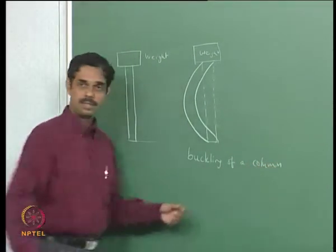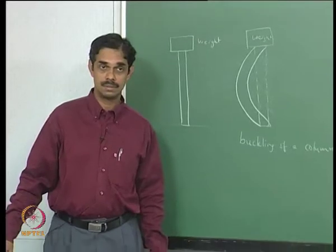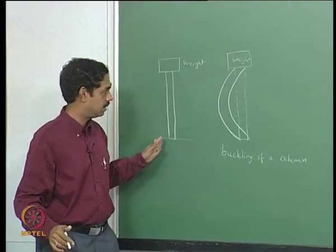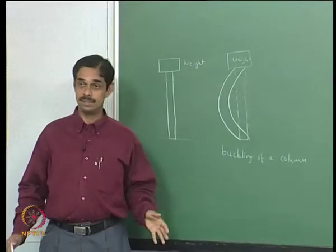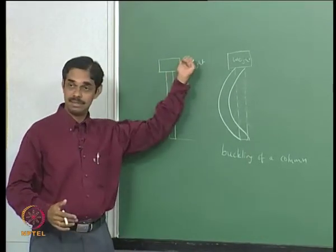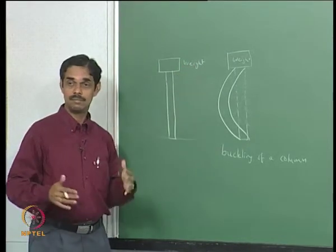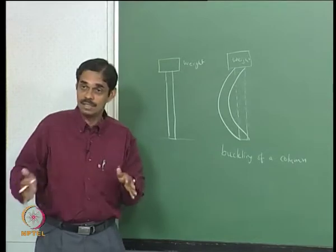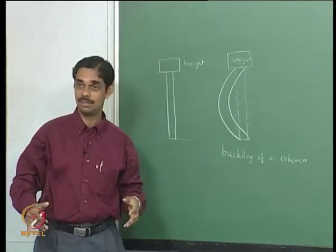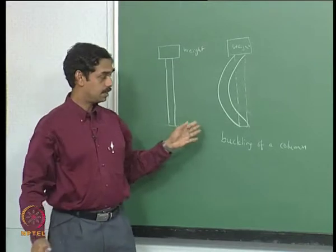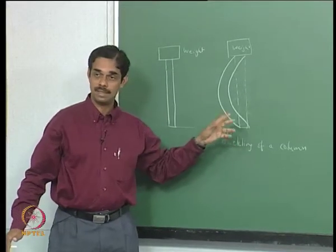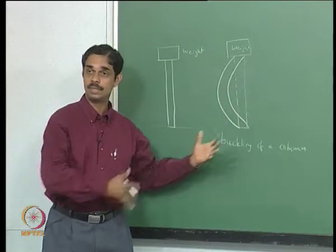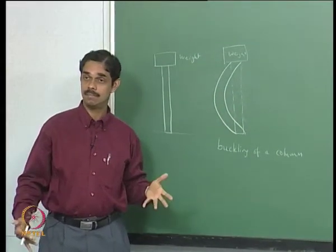Can everybody relate to this example? Good. So this is a case where you are changing the parameter — the weight or load applied — and continuously, smoothly changing the parameter results in a sudden, qualitative difference in the solution or observed behavior. This is a bifurcation.